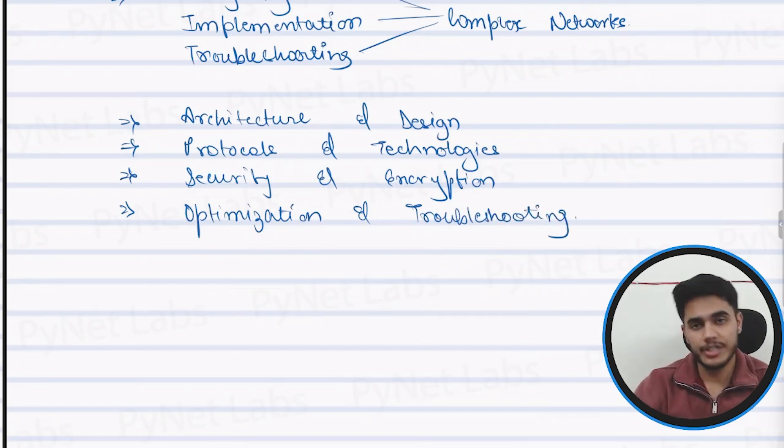So when you get onto the journey of achieving a CCIE certification, you not only explore the scope of just routing or switching or maybe just security, but you have a vast scope in which you are going to find out things related to understanding the architecture and design of the networks, the security and encryption of the networks, troubleshooting and optimization of the networks, as well as the protocols and technologies.